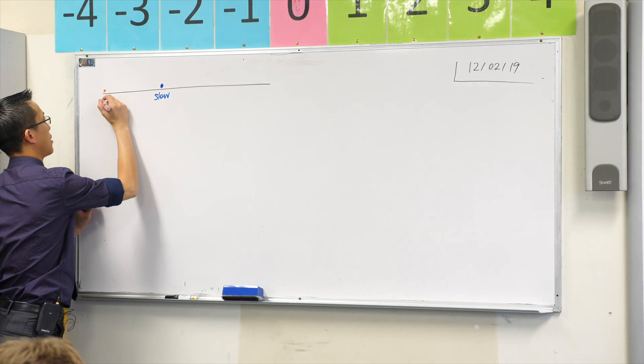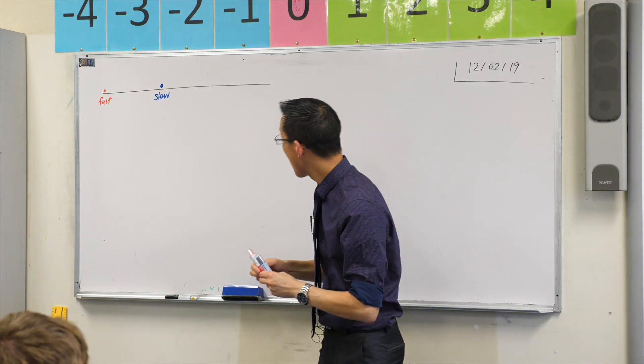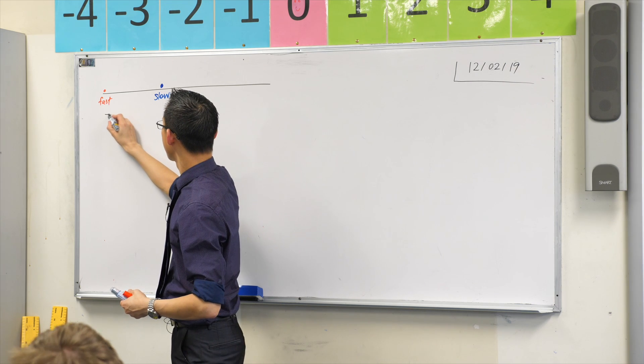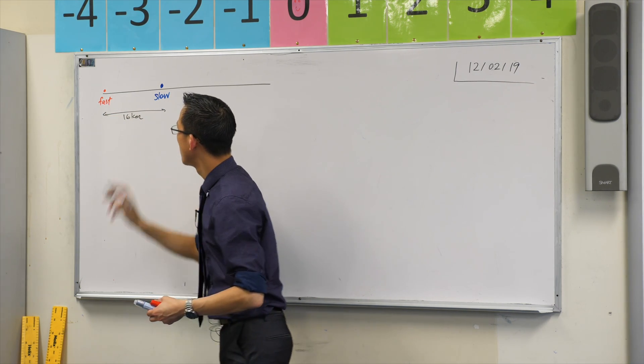So here's a fast person, here's a slow person, and we said they are 16 kilometers apart. So I'm just gonna put that distance in there.